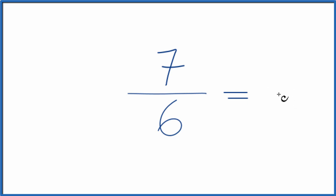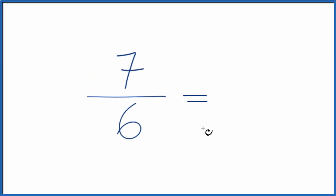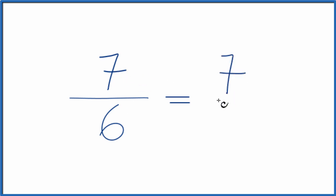To do that, we need to find a common factor, something that goes into 7 and 6 evenly. It turns out the only thing that goes into both 7 and 6, the only factor, is 1. Divide 7 by 1, you get 7. Divide 6 by 1, you get 6.